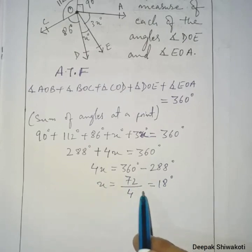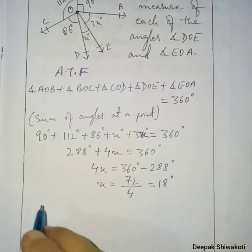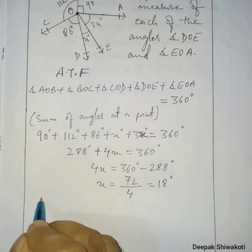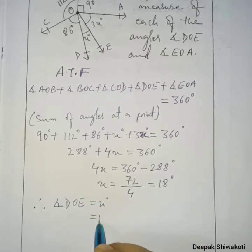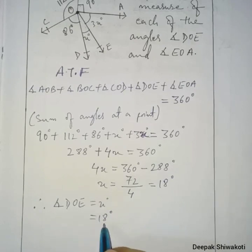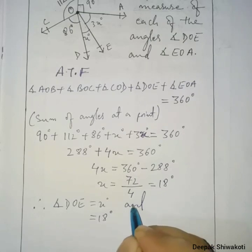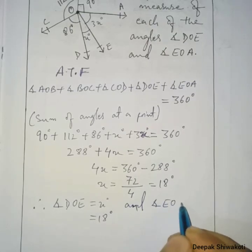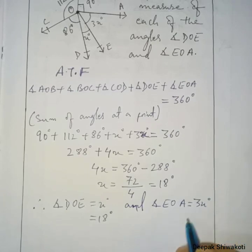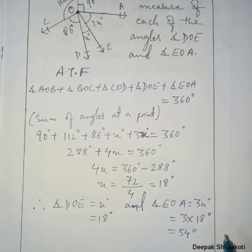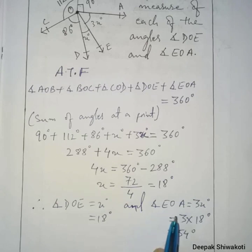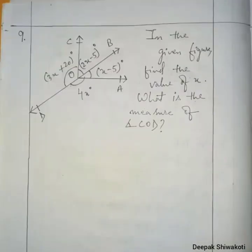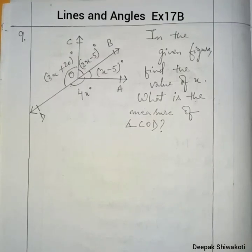Since x equals 18 degrees, angle DOE equals x degrees equals 18 degrees. Angle EOA equals 3x degrees equals 3 times 18 equals 54 degrees. We have now found the values of angle DOE and angle EOA.